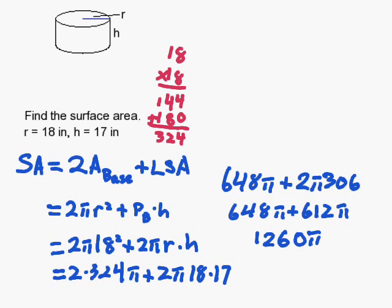So I get 1260 times pi inches squared. Don't forget your units. And remember that the answer has to be in inches squared because this is an area. And that completes our problem.